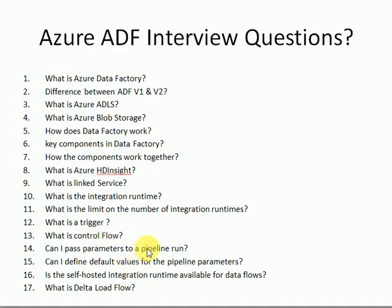When running your pipelines and you want to pass some parameters or values, you need to know how to pass parameters to a pipeline. Whenever you create a pipeline, you can create parameters and pass values at runtime. You need to give an example. You can also define default values for parameters — that option is available in ADF.